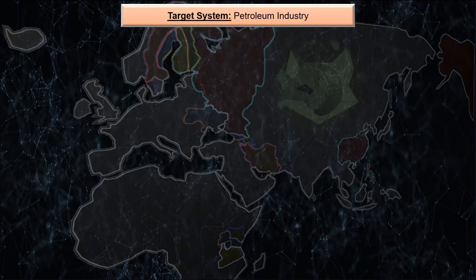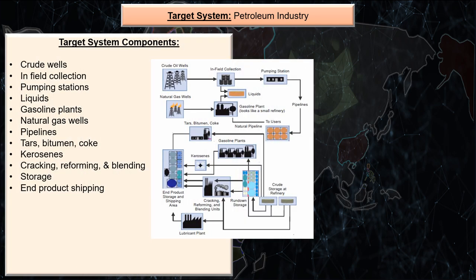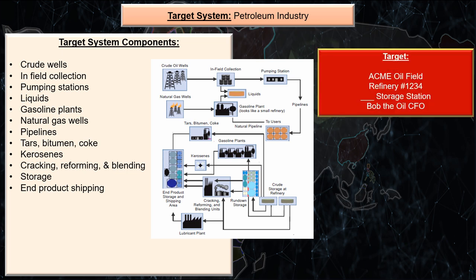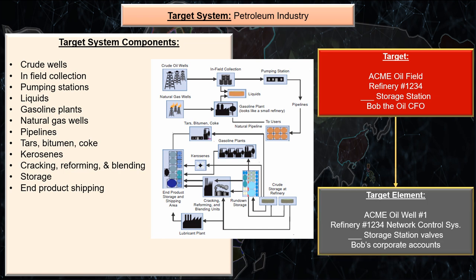Here we see the target system: Petroleum Industry. Its doctrinally defined target system components are crude wells, infield collection, pumping stations, liquids, gasoline plants, natural gas wells, pipelines, tars, bitumen coke, kerosene cracking, reforming, blending, storage, and end product shipping. From this, we can develop targets such as — making this up — the Acme oil field, refinery number 1234, the fill-in-the-blank storage station, Bob the oil chief financial officer, and so on. Some of the target elements of these targets are the number one oil well for the Acme oil field, the network control system for the refinery, the valves at the fill-in-the-blank oil station, and the corporate accounts of Bob.